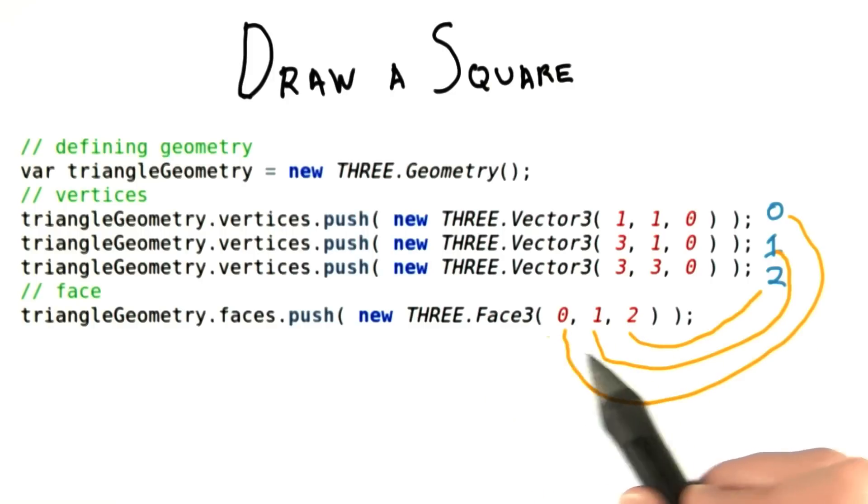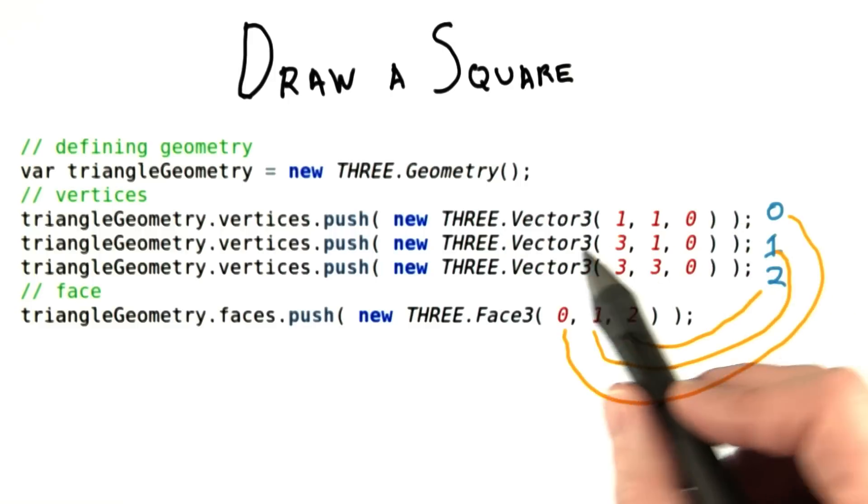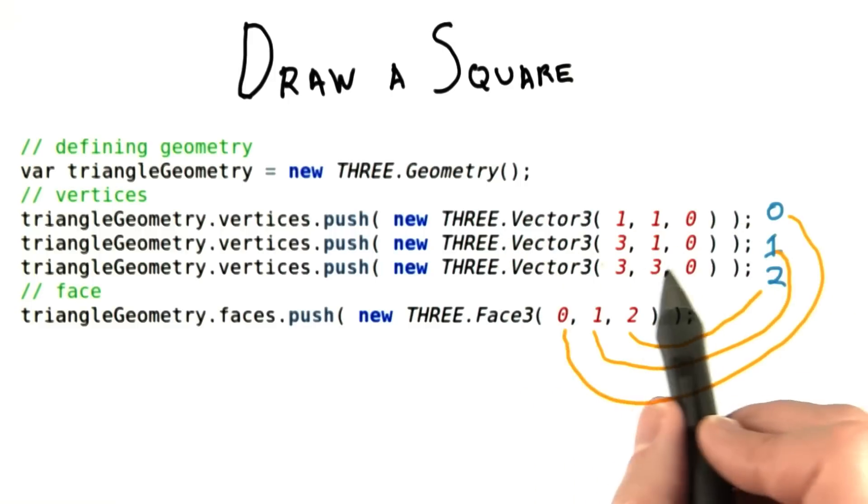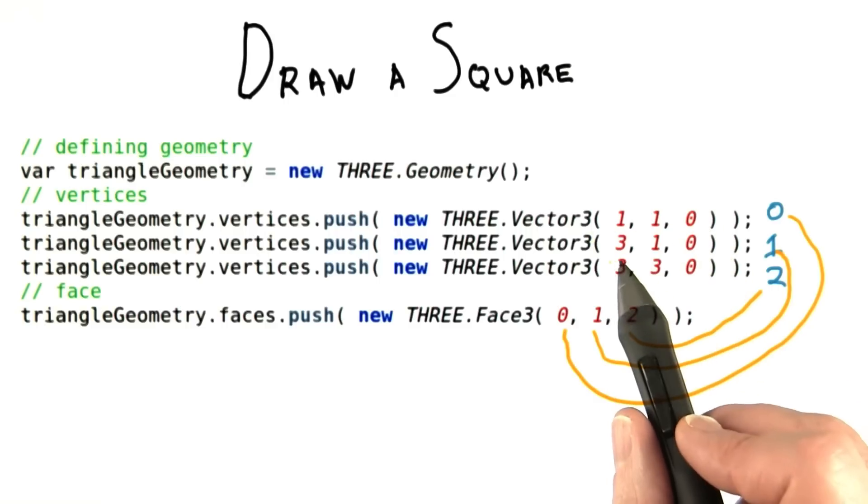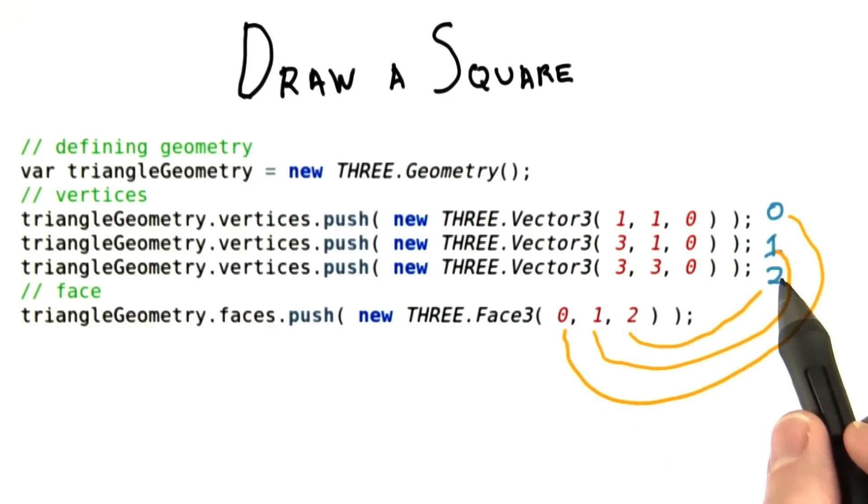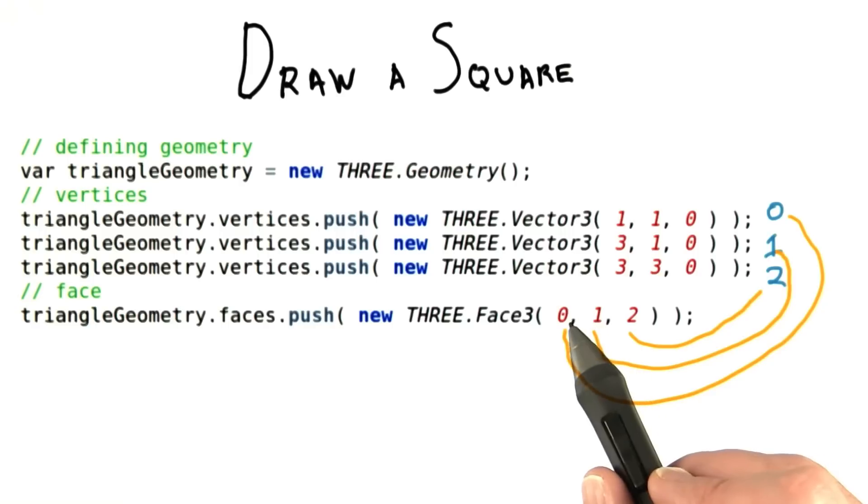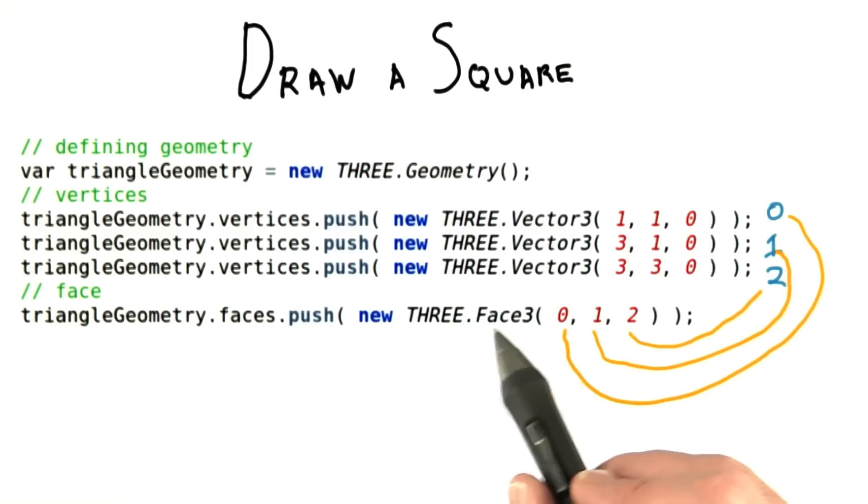The way face indices work is they point to the various vertices in the array. So this is vertex 0. We always start counting from 0. Vertex 1 and vertex 2. And by listing out those indices 0, 1, and 2, so these are integers, that says this triangle has this, this, and this vertex.